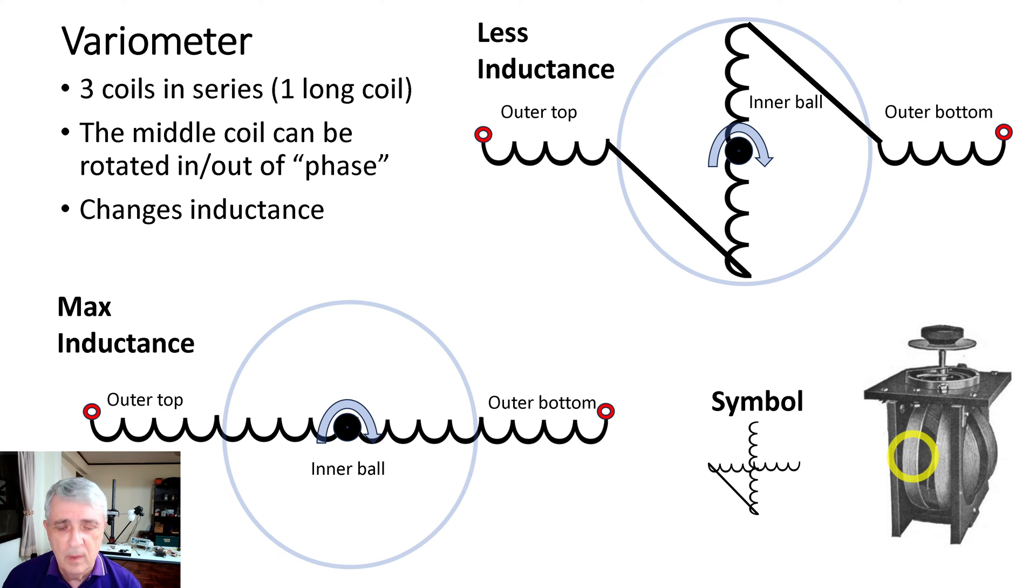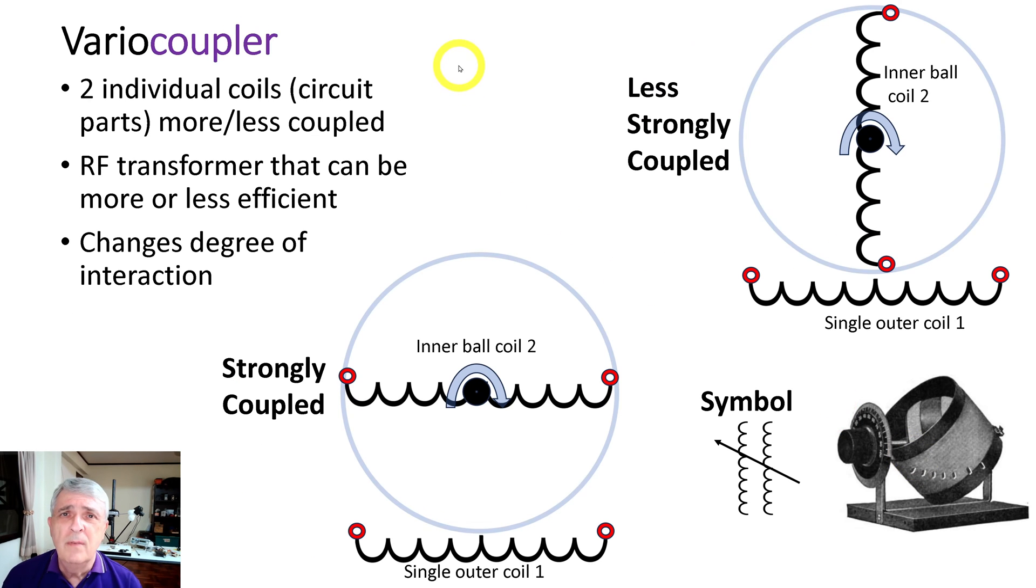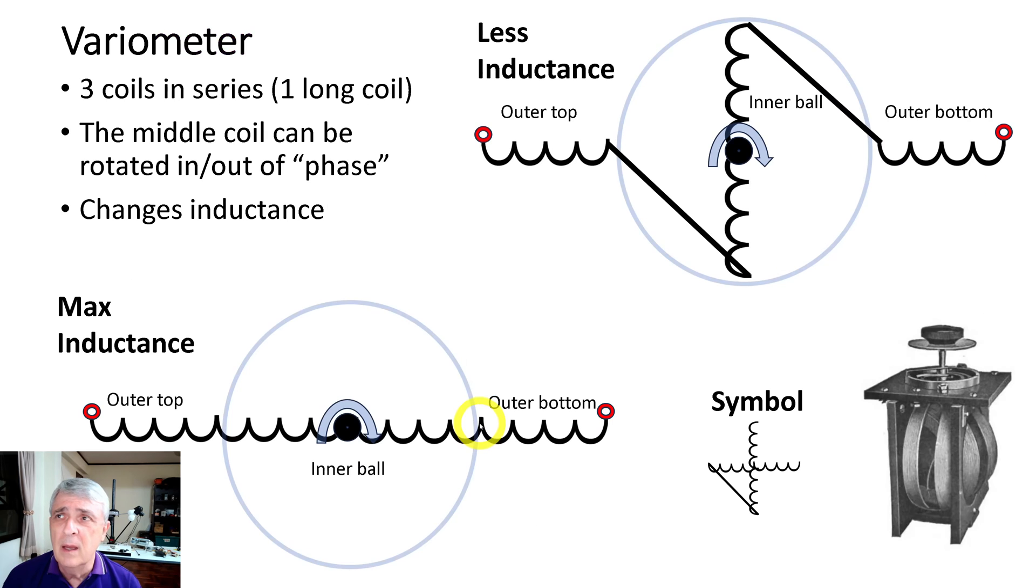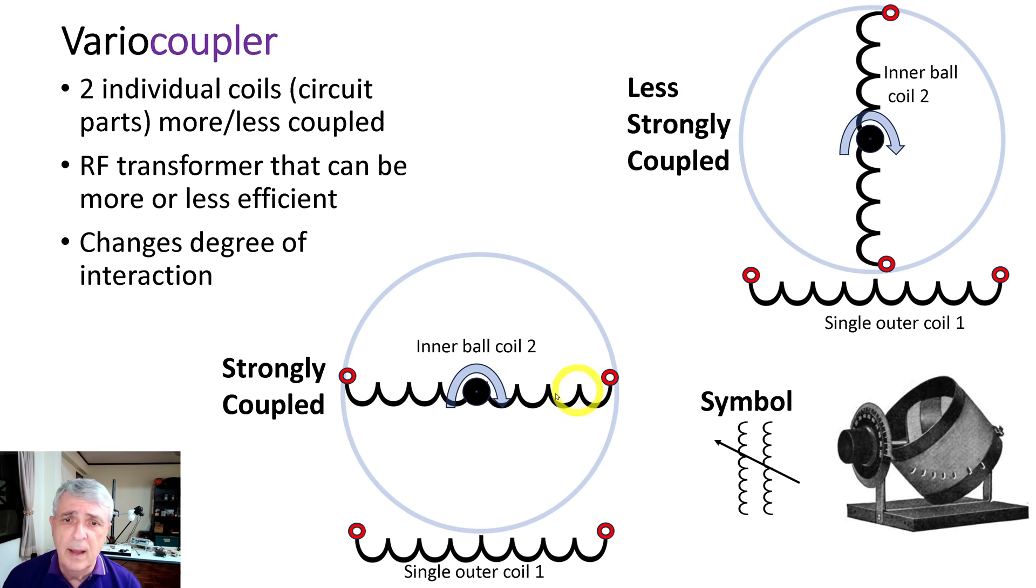Now a variocoupler - the devices look superficially the same, but they have very different functions. They can be built basically almost the same way, but with a little bit of wiring difference. So the variocoupler - there's two separate coils. These are connected separately. You can see the red connection points I put on here. So this is like a transformer and you have a primary winding and a secondary winding. And the variometer you have one long winding, but this you have two windings and you have two separate sets of connections.